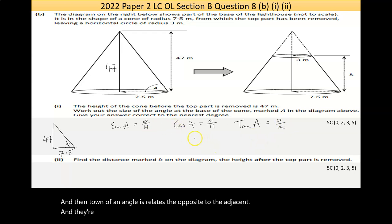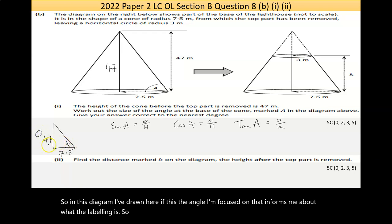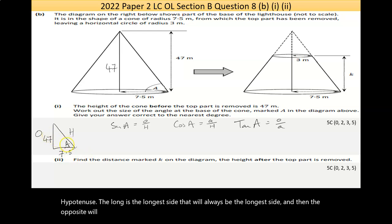Now, they're given in the math tables as well. So, in this diagram I've drawn here, if this is the angle I'm focused on, that informs me about what the labeling is. So, that's the opposite. Now, the hypotenuse is the longer side. It'll always be the longer side. And then the opposite will change depending on the angle you're finding. So, this is the one I'm trying to find. So, that's the opposite, and that's the adjacent.